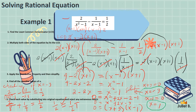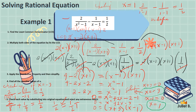Now checking x equals 1: 2 over 1 squared minus 1, minus 1 over 1 minus 1, equals 1 half. As you can see, 1 minus 1 is 0, making this part of the equation undefined. Since undefined does not equal 1 half, positive 1 is not a solution — it is an extraneous root. So only x equals negative 3 is the solution.